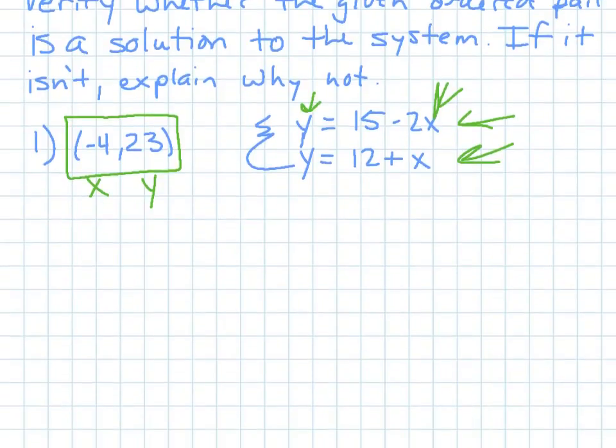So, if I plug in 23 into the first equation equals 15 minus 2 times negative 4, I'm going to see if both sides equal each other. I'm not going to move anything over. I'm just going to simplify this right side. So, negative 2 times negative 4 is 8, and then 15 plus 8 is 23. Checkmark. That works.